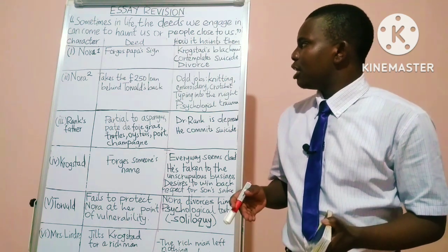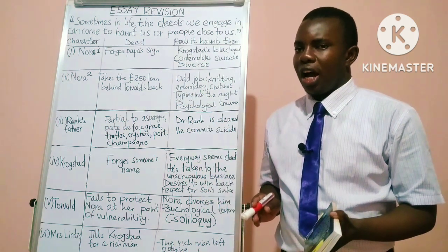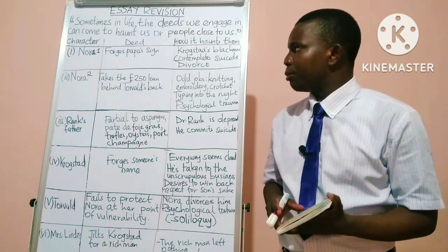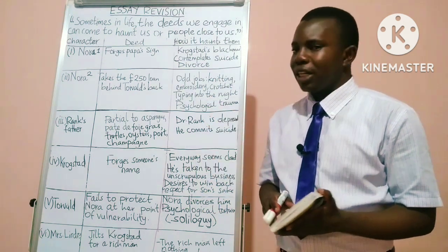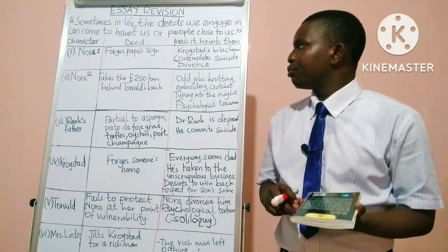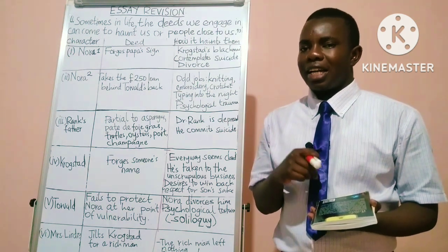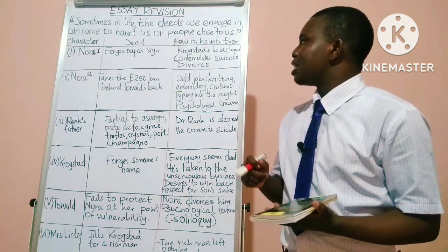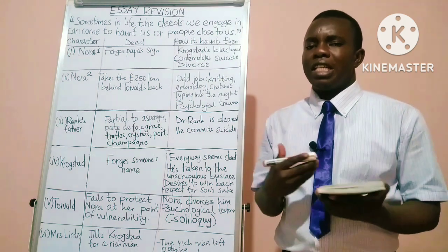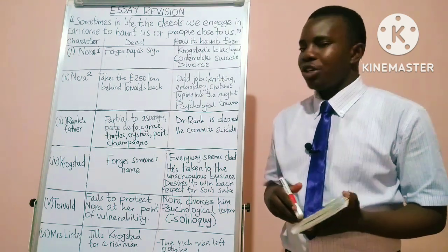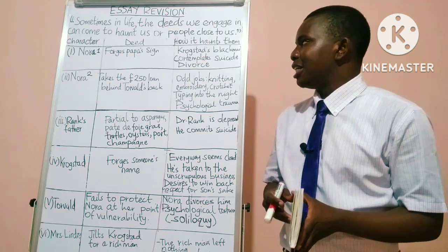I have divided my board into three columns to come up with the various points. On the first column, there is the character we are going to talk about. On the second column, there is the deed that the character engages in. And on the third column, there is how that deed haunts the character. The first character to be discussed, forming the first paragraph, is Nora.